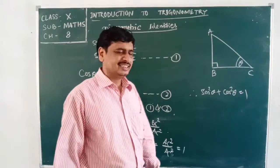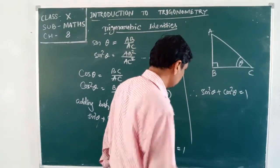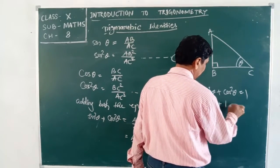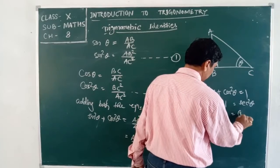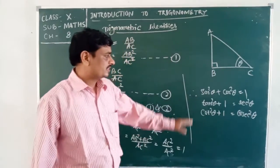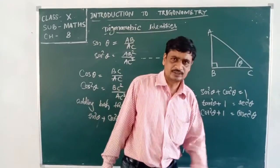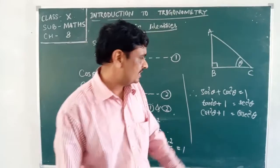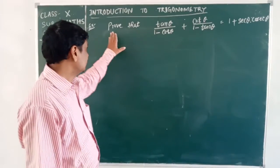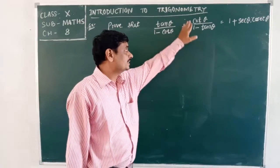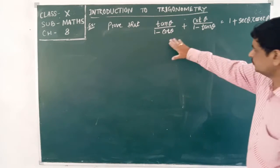The three trigonometric identities are: sin²θ + cos²θ = 1, tan²θ + 1 = sec²θ, and cot²θ + 1 = cosec²θ. We will use these identities to prove some statements. The next statement to prove is: tan θ/(1 − cot θ) + cot θ/(1 − tan θ) = 1 + sec θ · cosec θ.